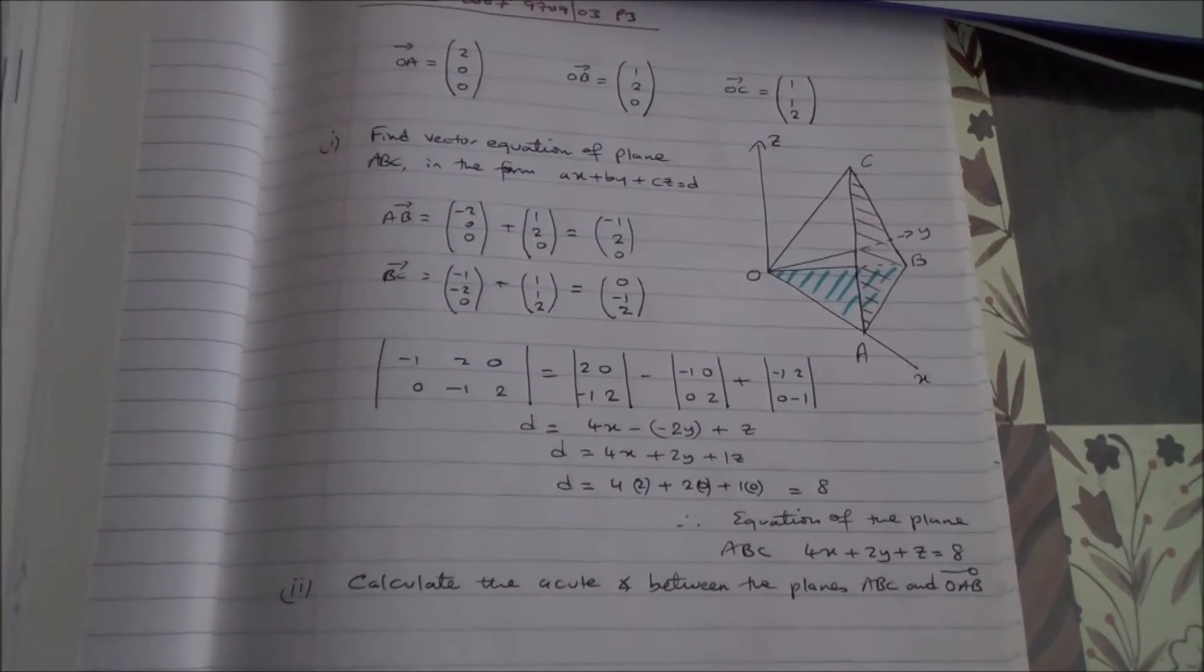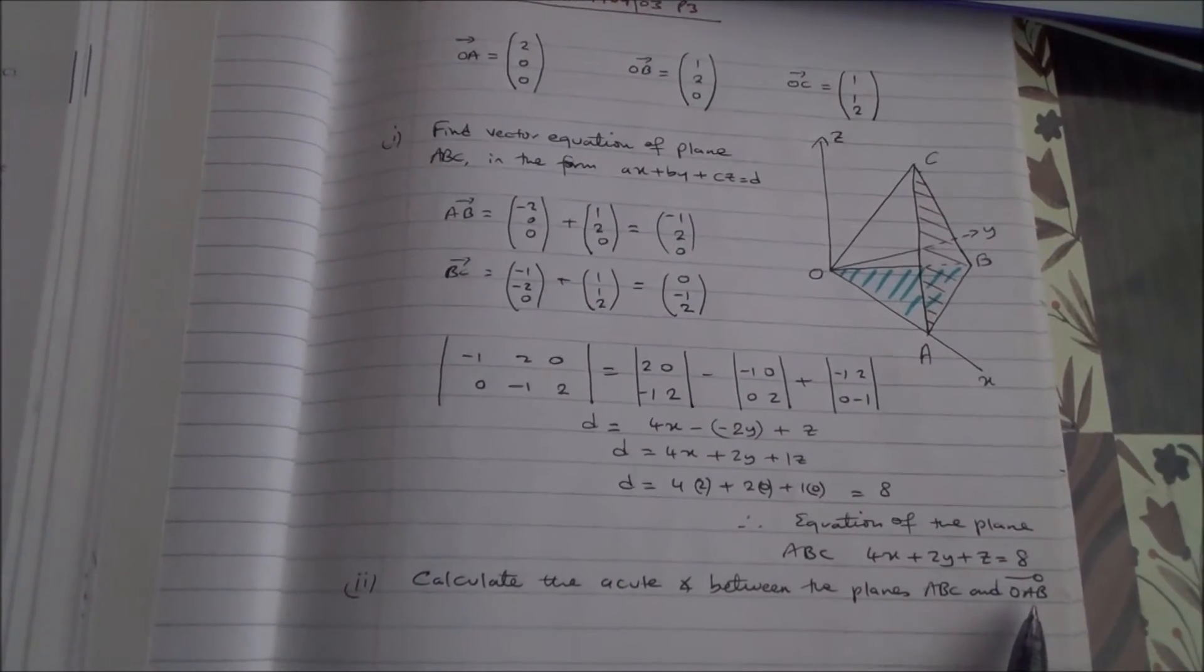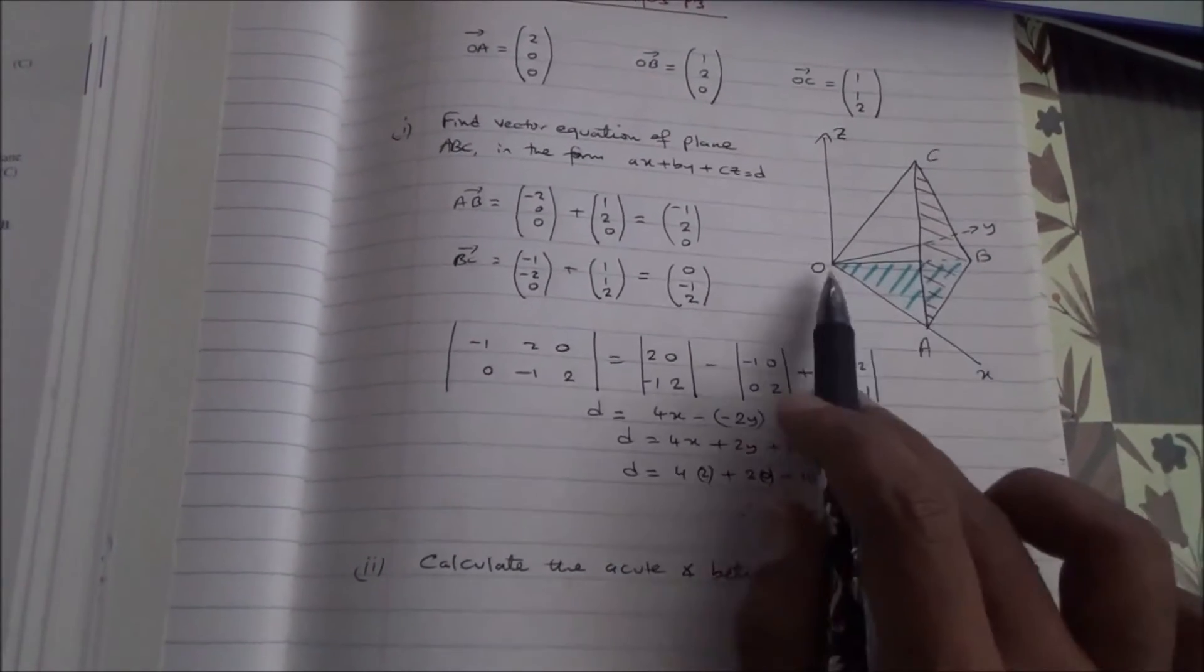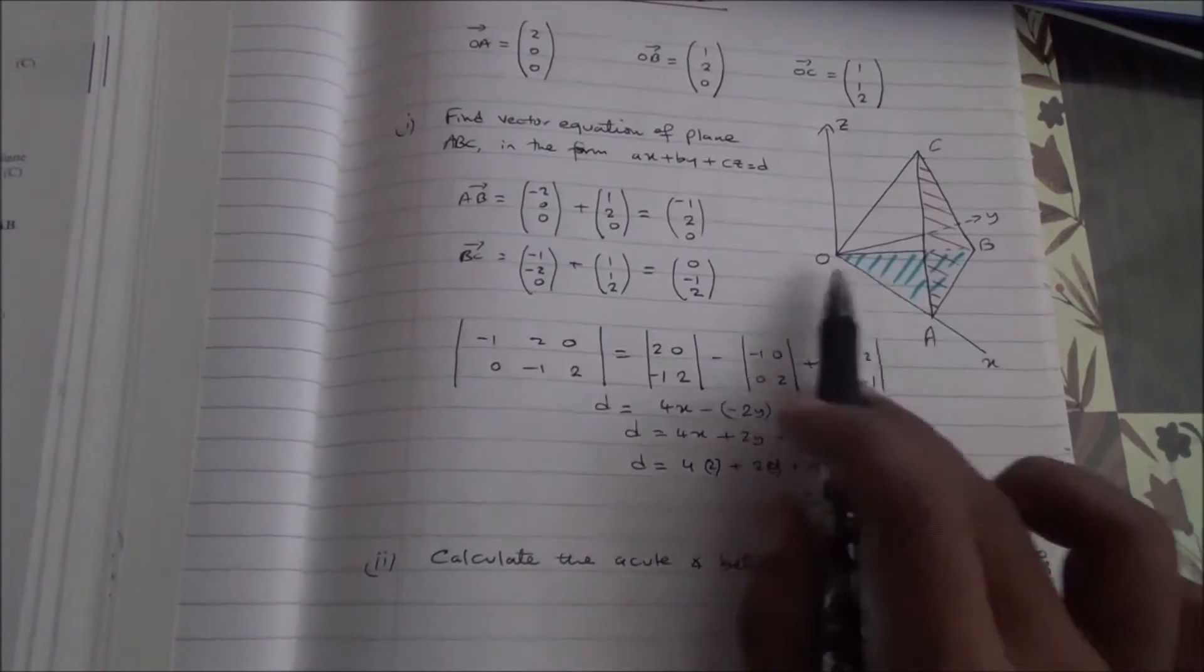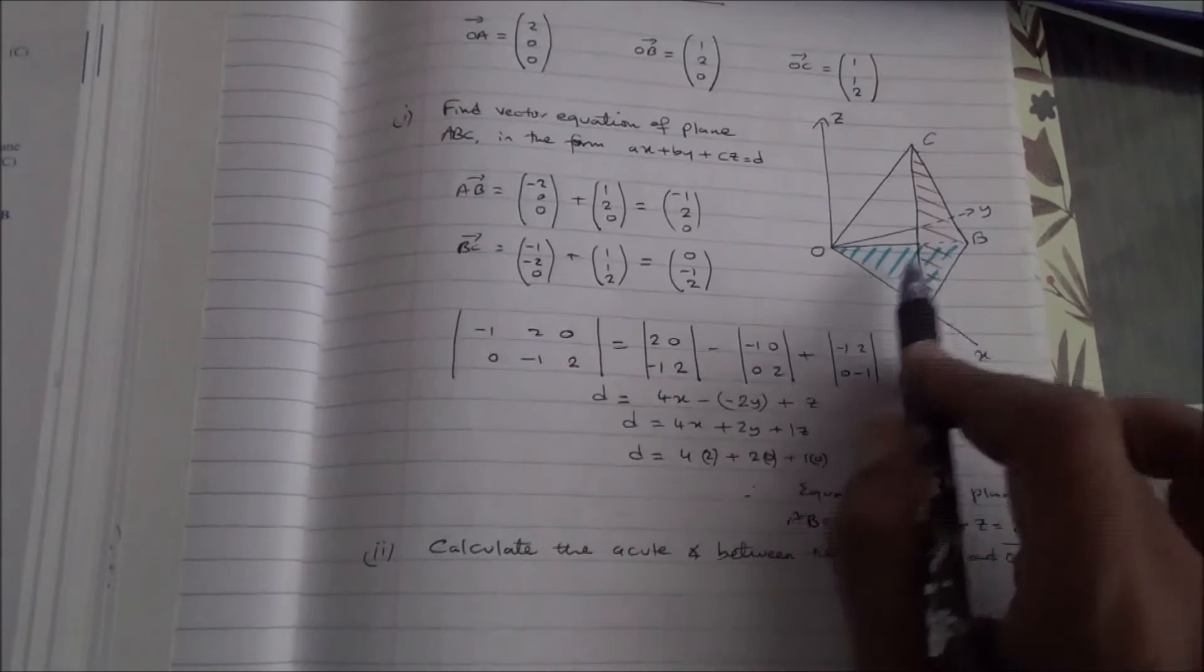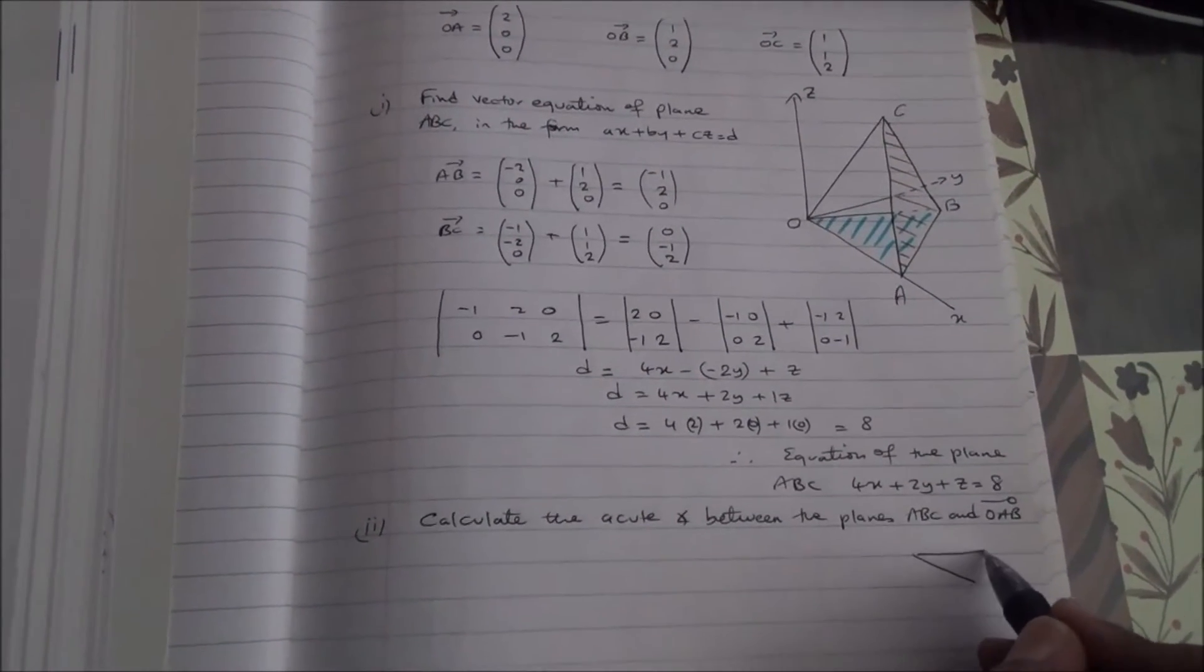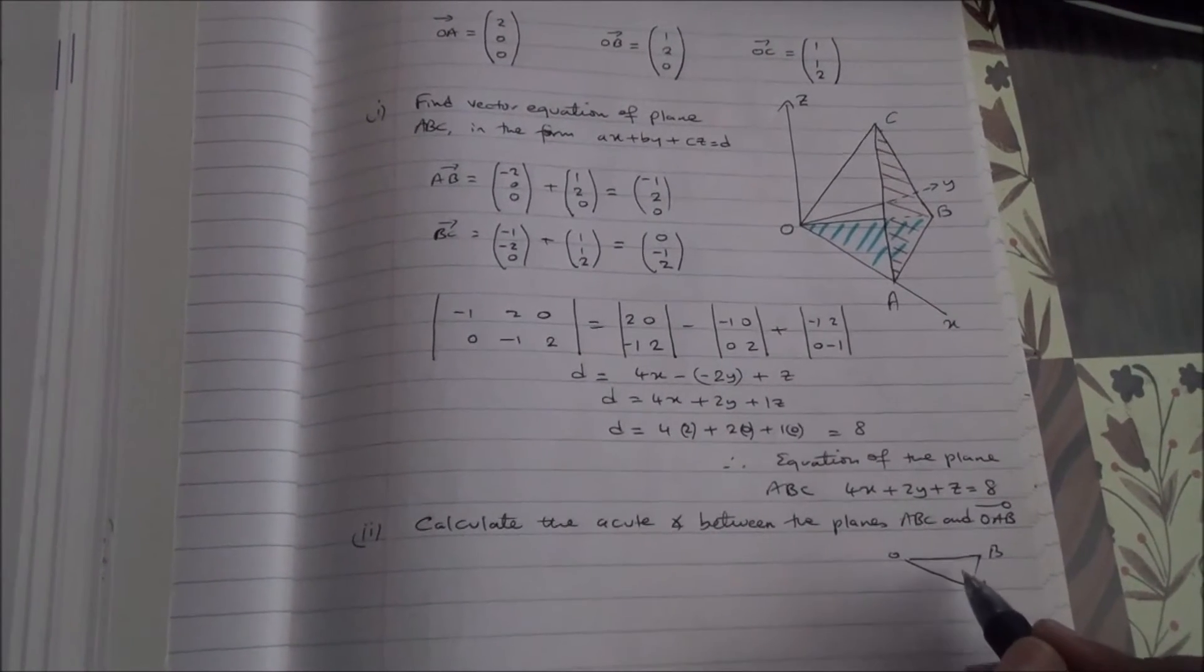Now, for the second part, we need to calculate the acute angle between the planes ABC and OAB. Now, this is the plane ABC, and down here we've got the plane OAB. Now, if A and B are flat on the ground, a normal vector to the plane OAB will be, let us say, this is OAB.